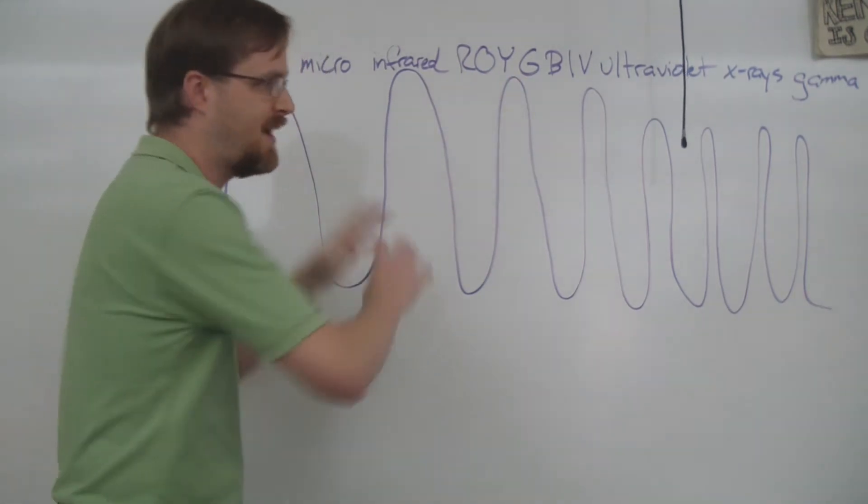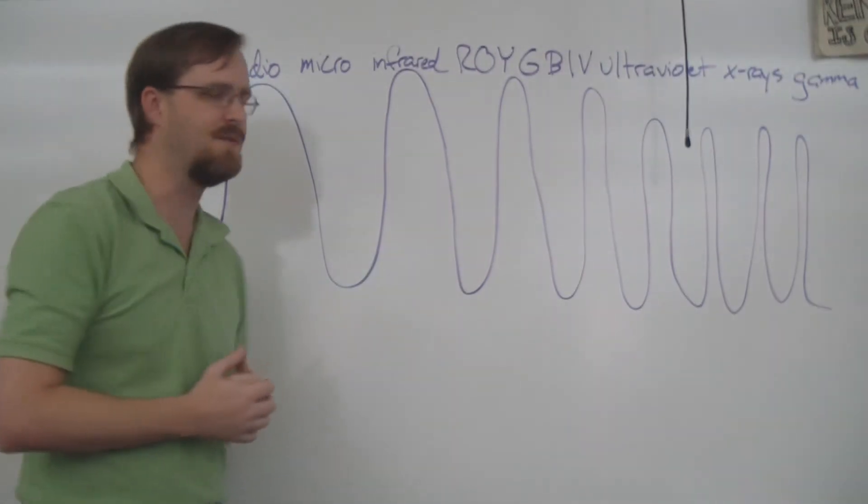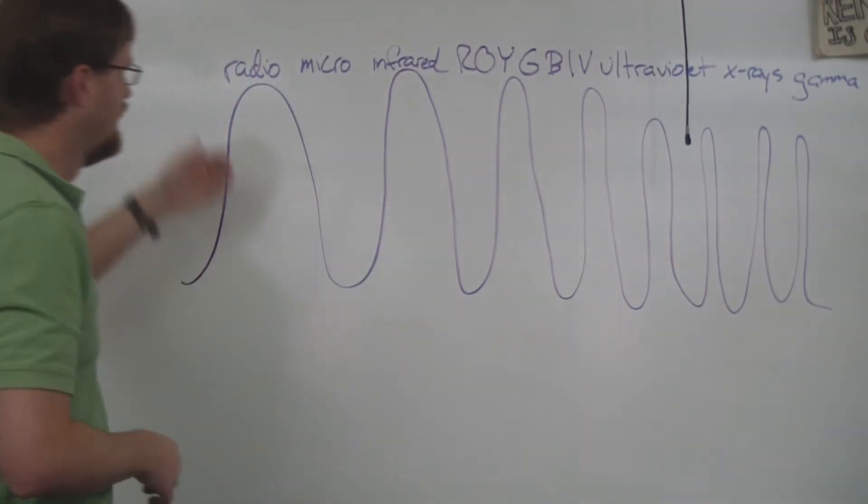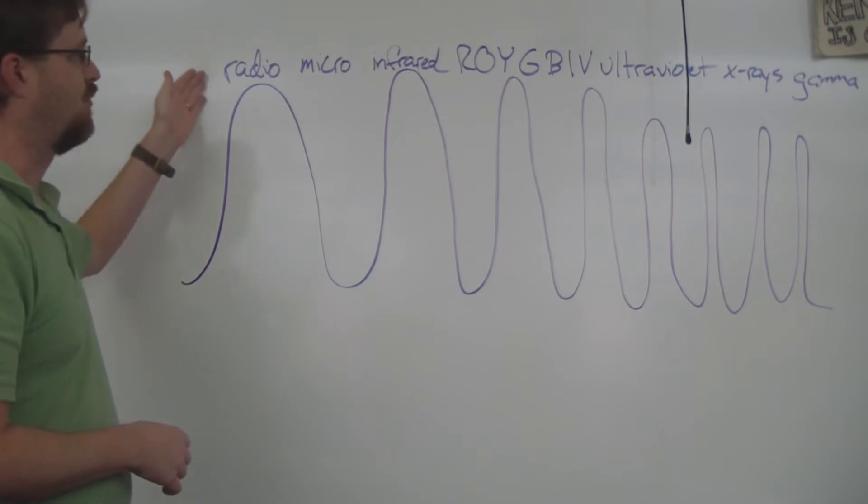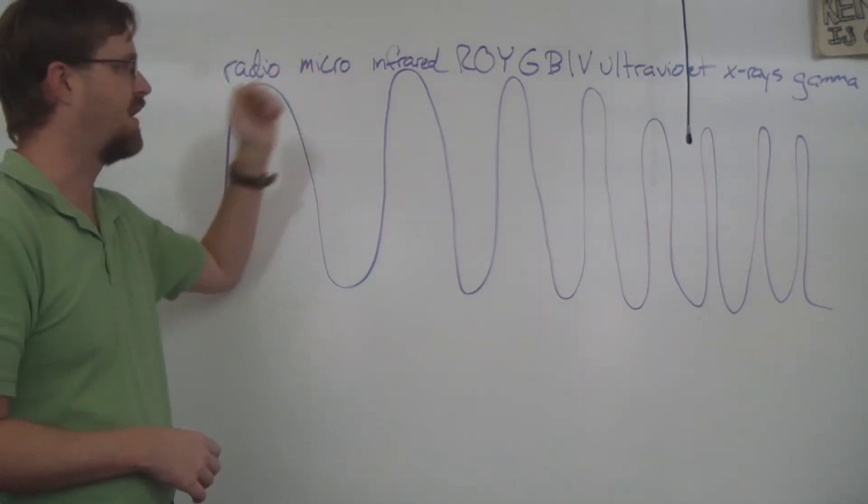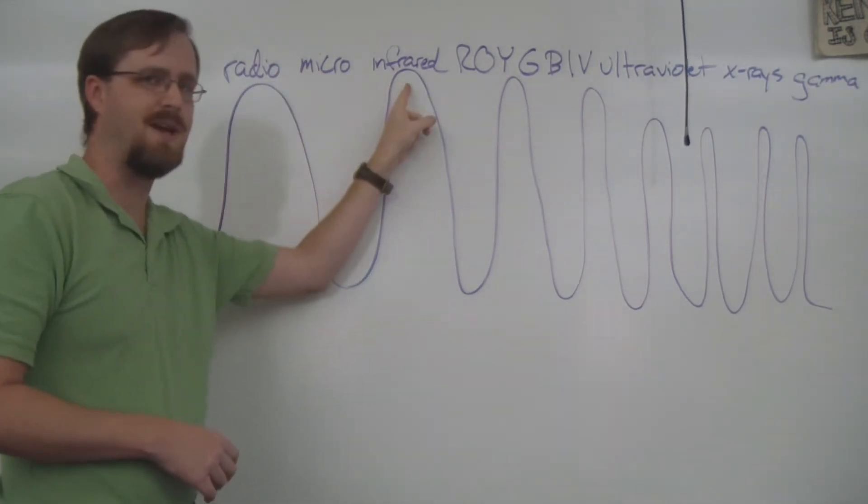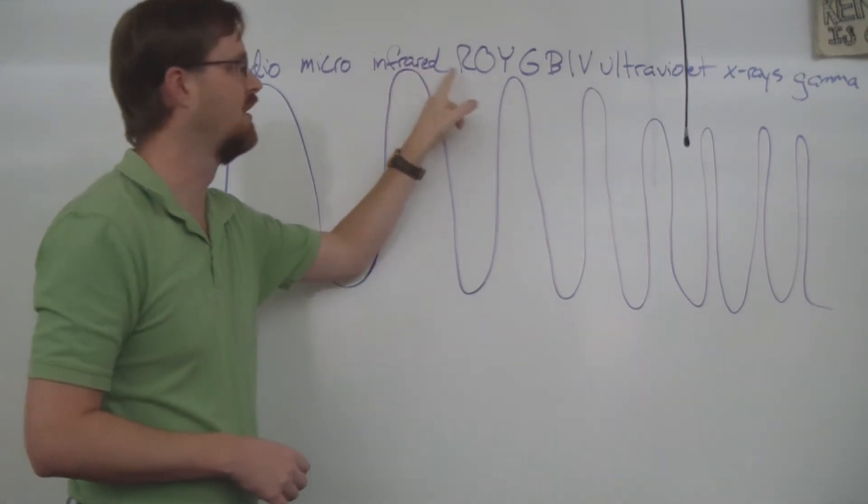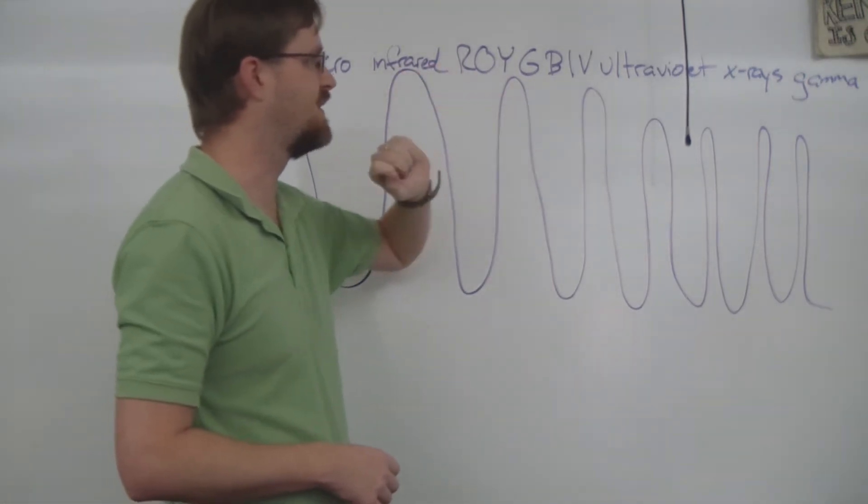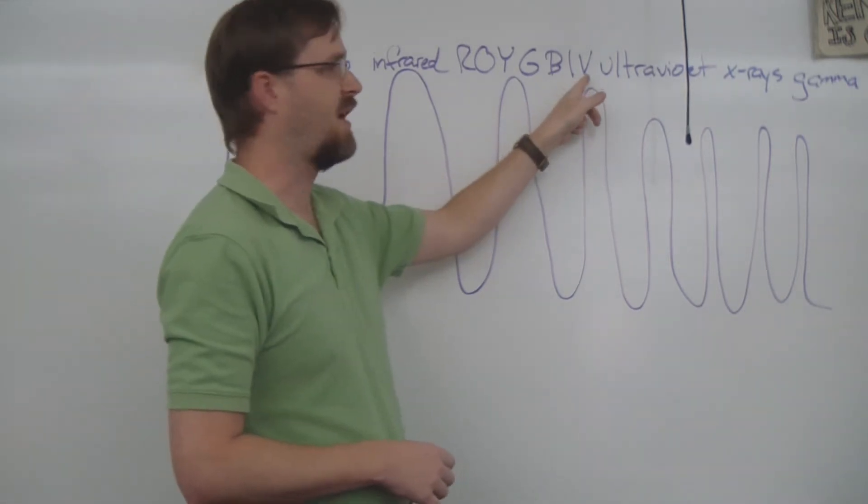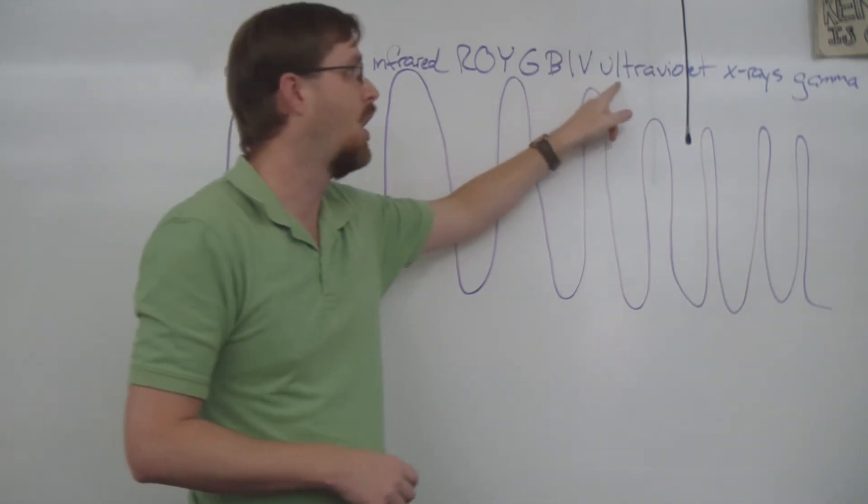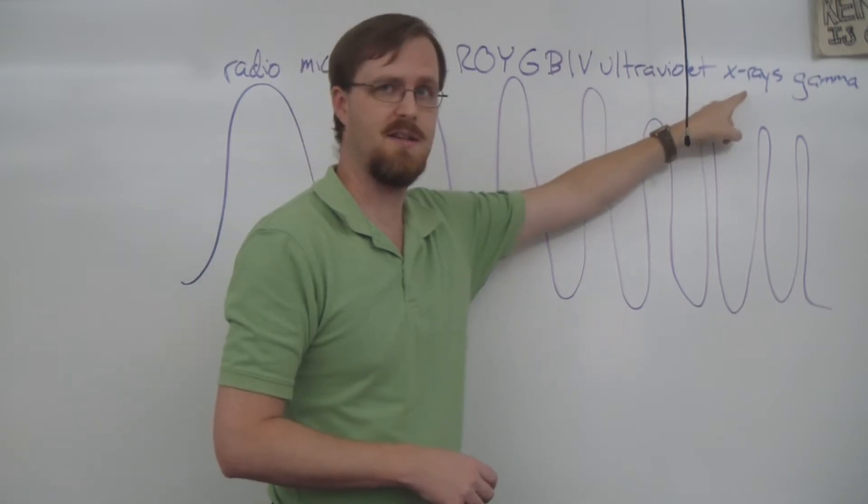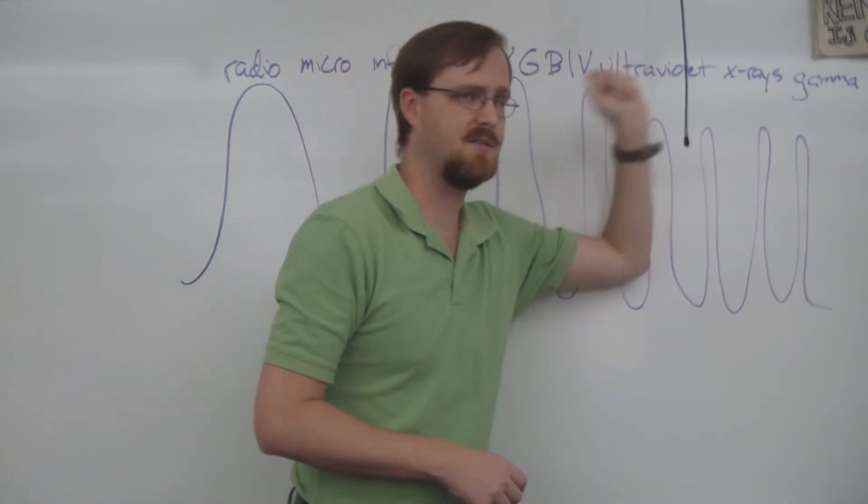We can actually expand that out into different forms of energy. So over here on the left we've got radio waves, and then microwaves, then infrared light right next to the red color. We do our colors in the visible light spectrum. Right above violet is the ultraviolet, and then X-rays, and then finally gamma rays.